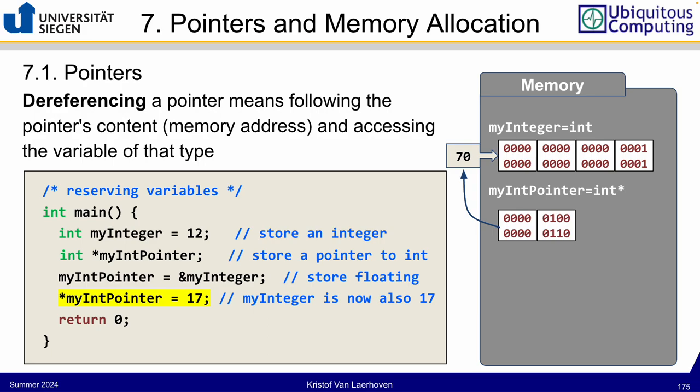This can be done with any type — a character, a boolean, or with classes as we'll see as well. If you have an object of a particular class, that is treated as a particular type and you can have a pointer to that. The memory space does not have to be two or four bytes — it can also be a megabyte or a gigabyte if that object is that large.